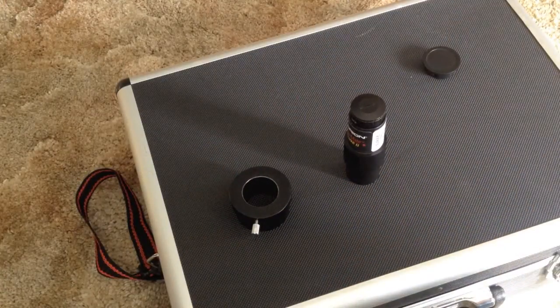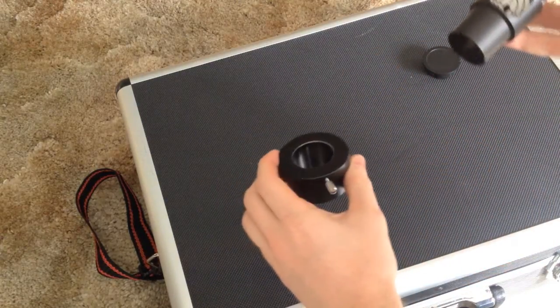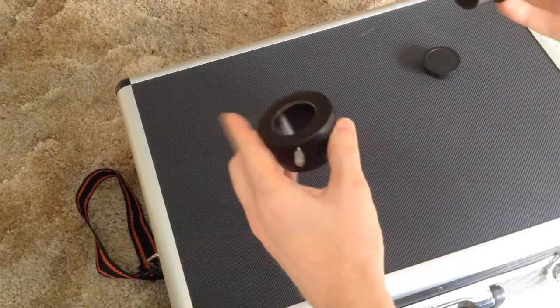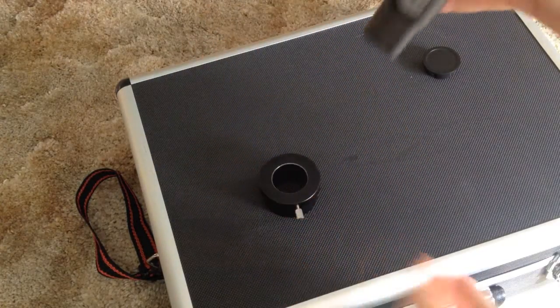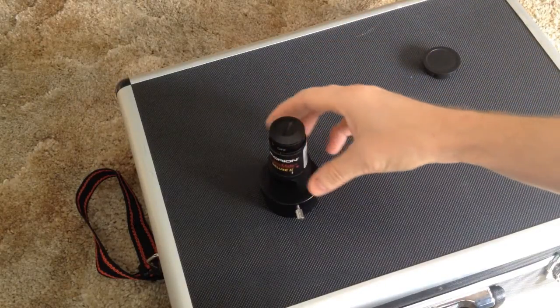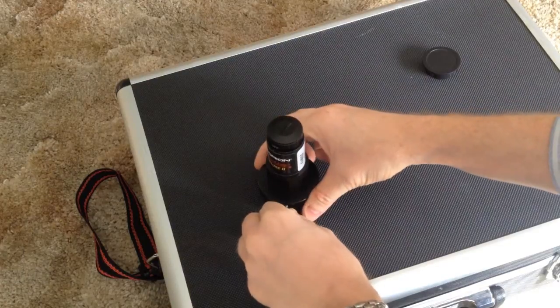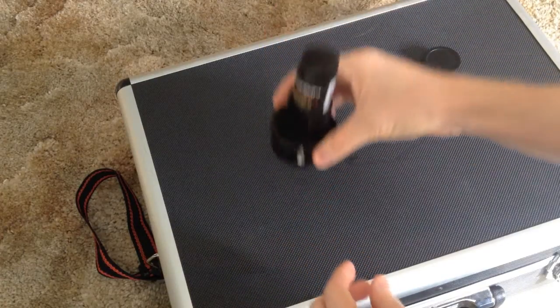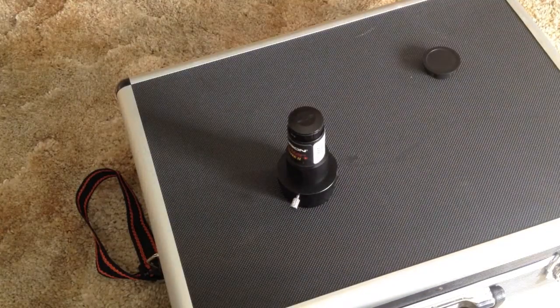The manual tells you that you should put the collimator into the focuser so that it's level. The easiest way for me to do that is to take the 1.25 inch adapter out and then put the collimator in. They tell you not to tighten these knobs but I go ahead and do it. Now it's nice and snug in my adapter and then I'll put it in the focuser.